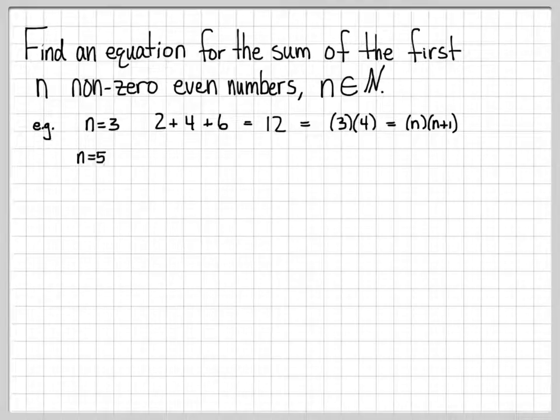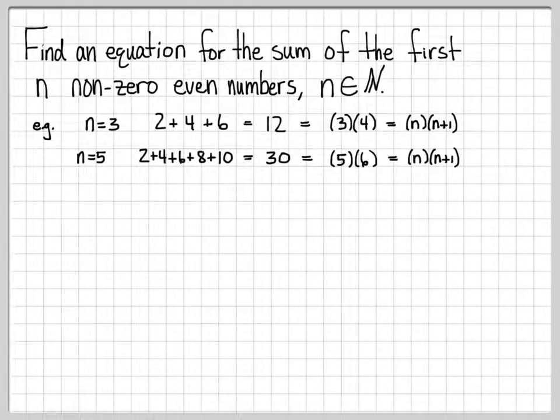Let's look at a few more just to see what this pattern looks like. What if n was 5? I have to write down the first 5 non-zero even numbers: 2 plus 4 plus 6 plus 8 plus 10. If you add all that up, you get 30. 30 can be written as 5 times 6, which again has the form of n times n plus 1.